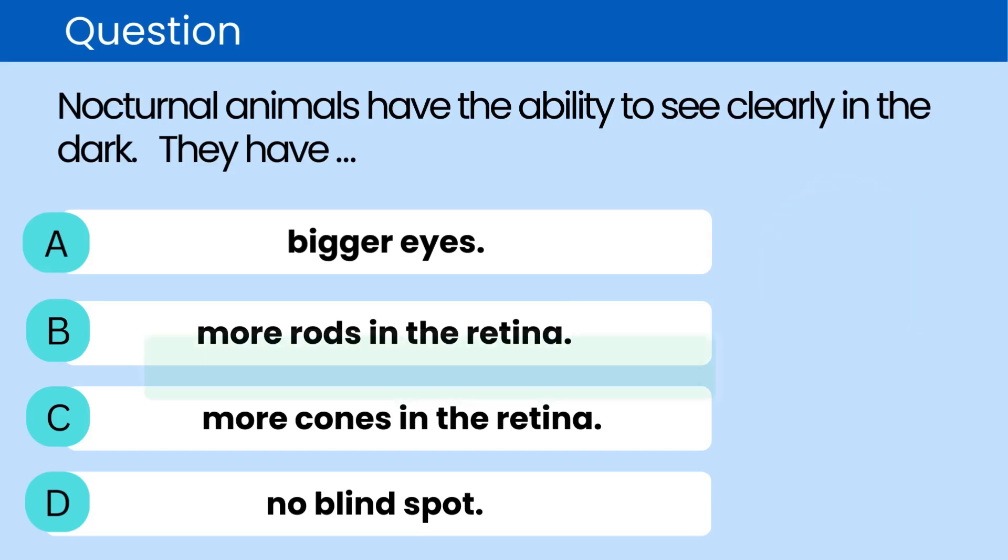The correct answer is B. More rods in the retina. Nocturnal animals have more rods, which are photoreceptor cells in the retina that are highly sensitive to low light levels, enabling them to see in the dark.